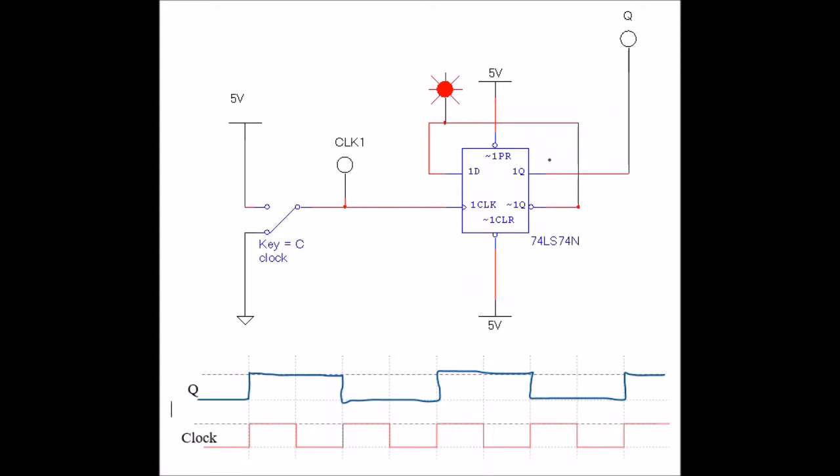If Q happens to be a 0, I have a 1 sitting in D. So when the clock goes, Q becomes a 1 and then not Q becomes a 0 and I get that toggle mode. All right, let's look at two flip-flops in a row now. This is getting exciting.